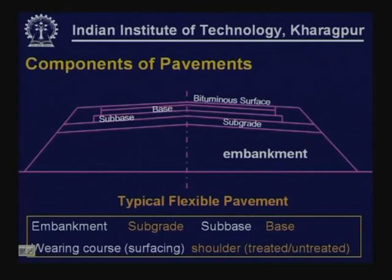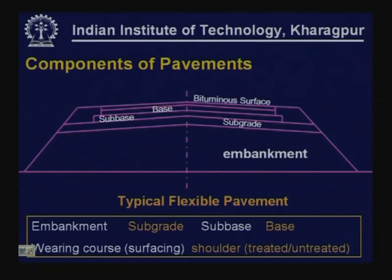Flexible pavements and concrete pavements have different components. A typical flexible pavement has embankment, subgrade — the prepared portion of the foundation — subbase, base, wearing coats also called surfacing, and shoulders either treated or untreated. We are going to use aggregates in almost all these components, especially bituminous layers, base and subbases, and in shoulders also.